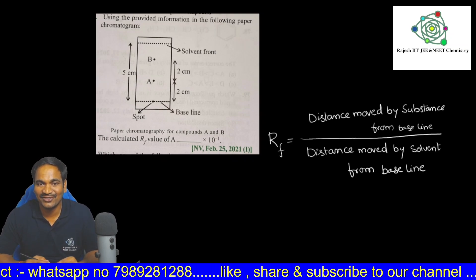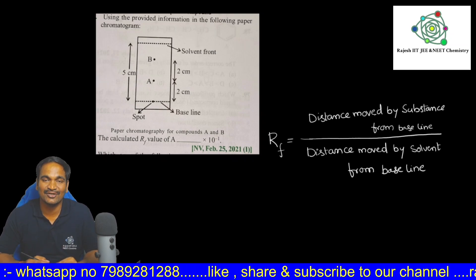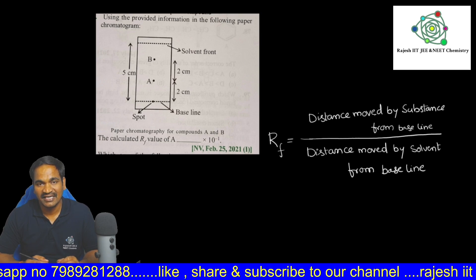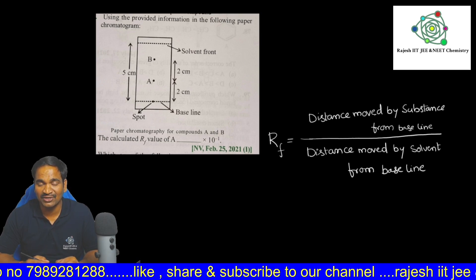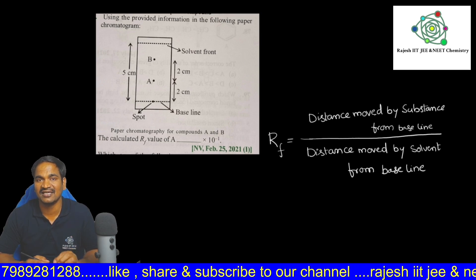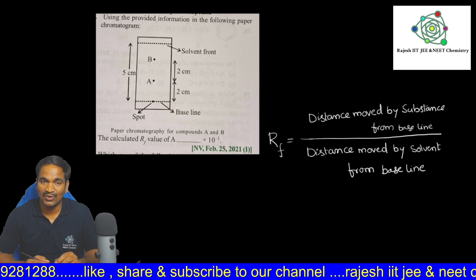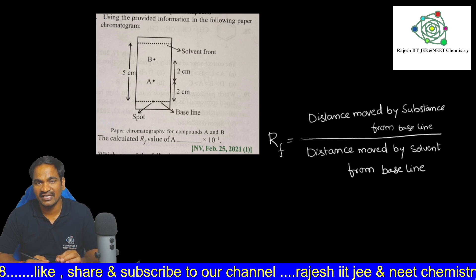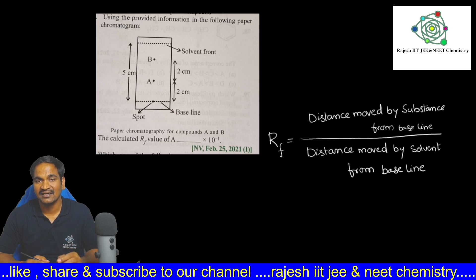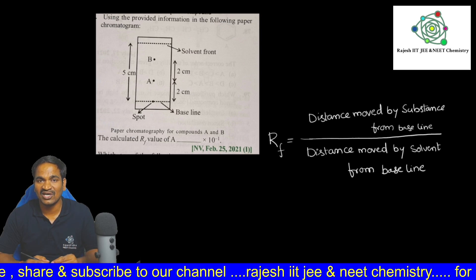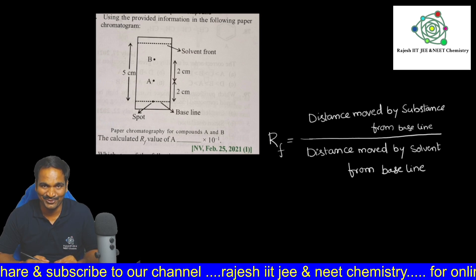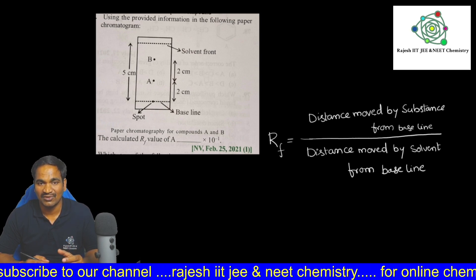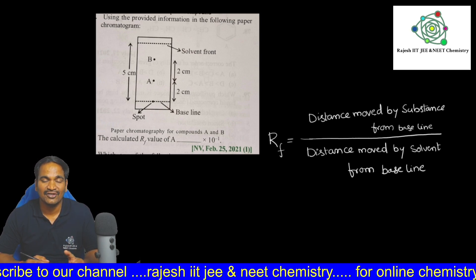Hello students, today we are going to focus on chromatography problems. These models were given in 2021, 2022, and 2023. Generally, these models were given as integer type questions — very important. These questions are related to the retardation factor RF value, so now let's solve this problem in a simple way.